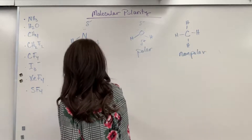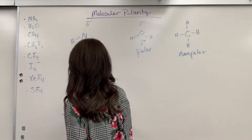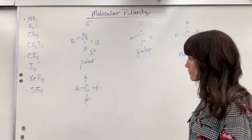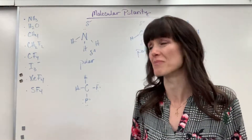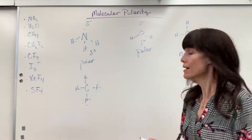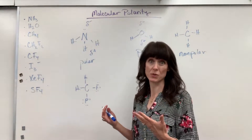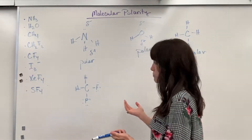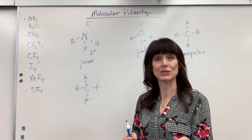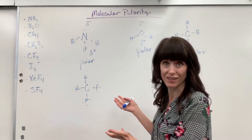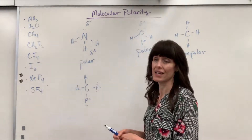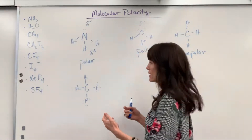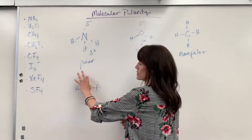Next, let's look at CH2F2. There's the Lewis dot structure. I look at the central atom — lone pairs are only checked on the central atom. I look at the central atom carbon: no lone pairs. There are lone pairs on the substituent atoms, but that doesn't matter — you're only looking at lone pairs on the central atom. So second question: is it symmetrical? Are all the atoms identical? No — I have two hydrogens and two fluorines.